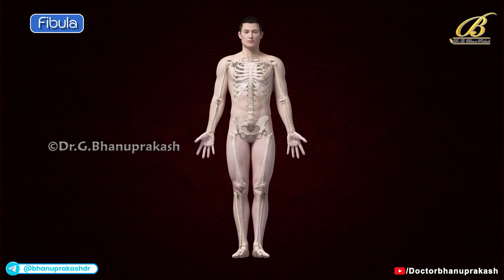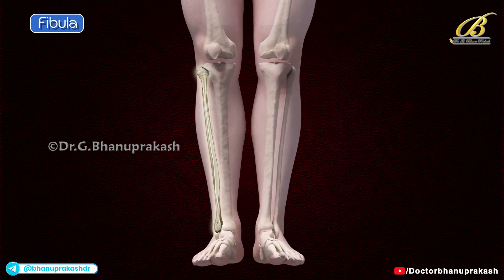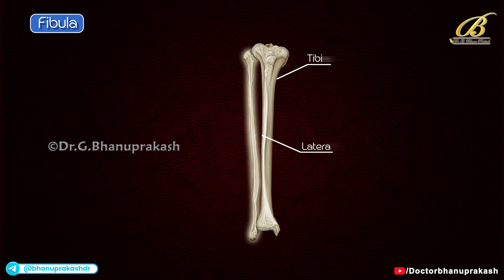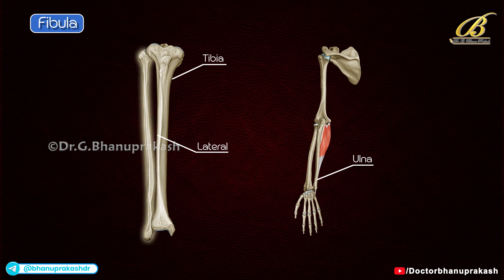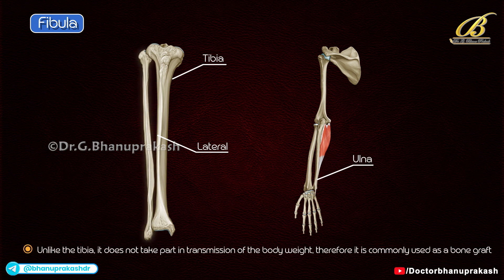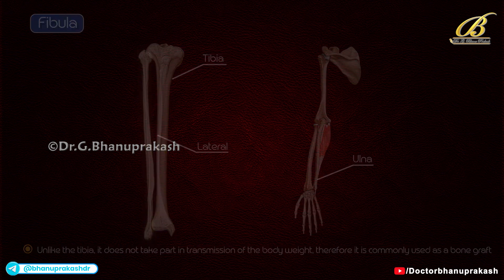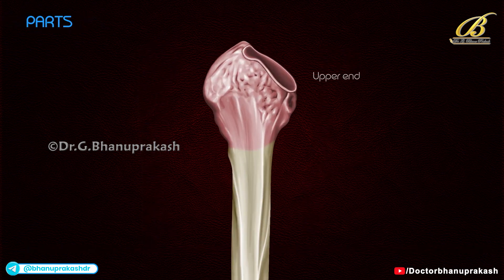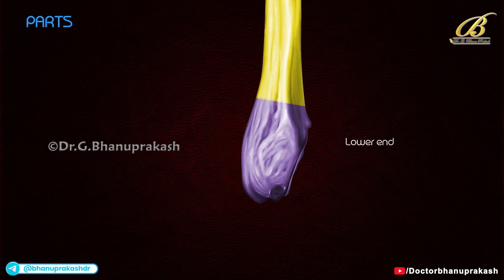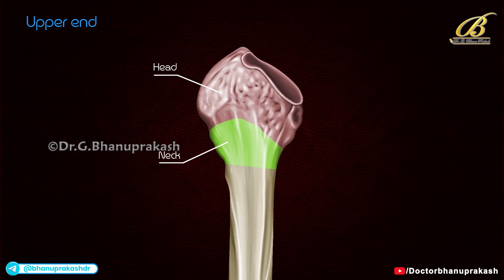The fibula is a long bone found in the lower limb, situated on the lateral side of the leg. It lies lateral to the tibia and is homologous with the ulna in the upper limb. Unlike the tibia, it does not take part in transmission of body weight; therefore it is commonly used as a bone graft. Its parts are the upper end, shaft, and lower end.